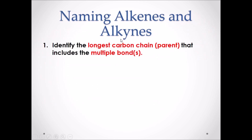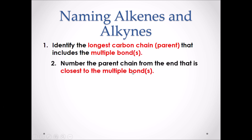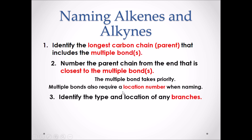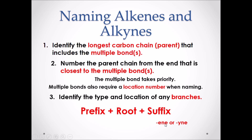Naming alkenes and alkynes. Number one: identify the longest carbon chain that includes the multiple bond. Number two: number the parent chain from the end that is closest to the multiple bond. The multiple bond takes priority over branches. Multiple bonds also require a number location when naming. Number three: identify the type and location of any branches. And remember, when you write your name, it's always prefix — the branches — plus the root — the longest carbon chain — plus the suffix, which would be the type of organic molecule. In this example, it would either be E-N-E or Y-N-E.